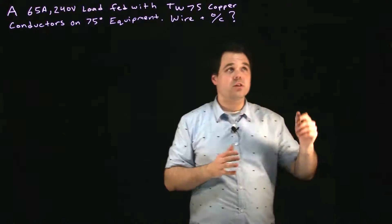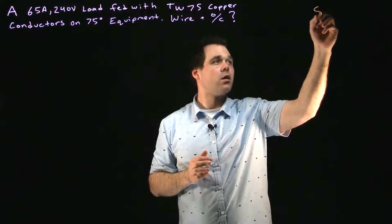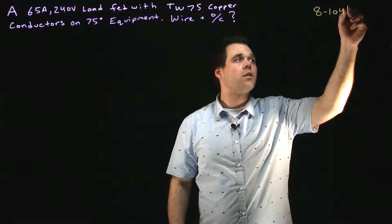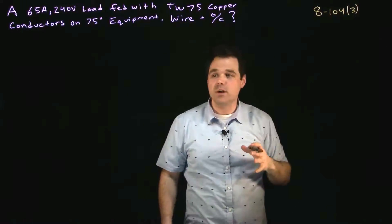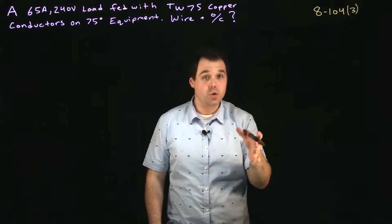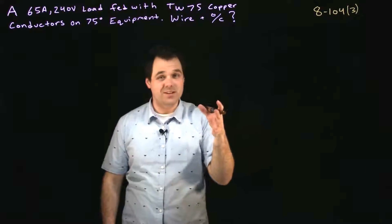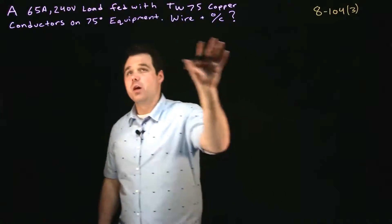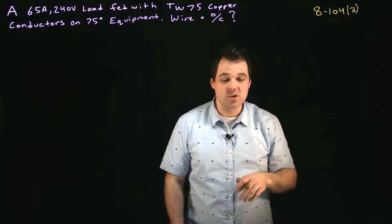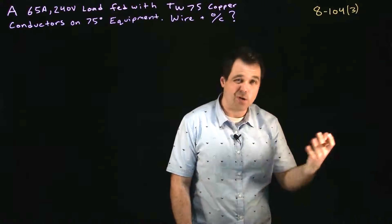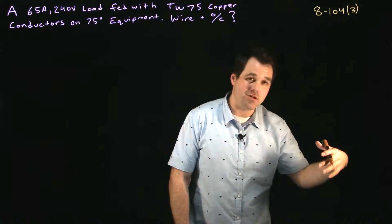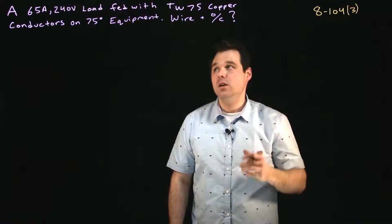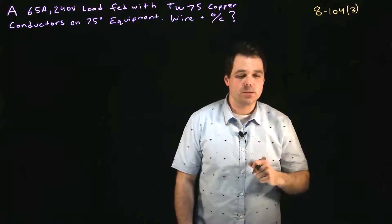The first place to start is 8104, Subrule 3. Subrule 3 basically says your load shall be considered a continuous load unless you can prove it's not — meaning it's not running more than one hour in any two-hour period under 225 amps. There's nothing here to prove it is not a continuous load, so we assume this is a continuous load.